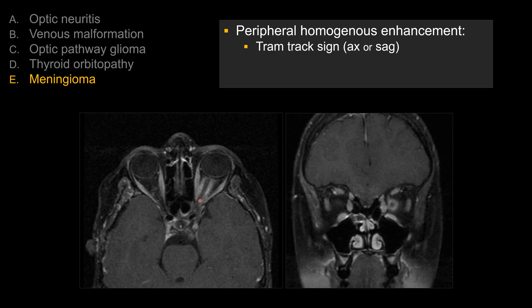Here you can clearly see a lesion that's outside of the optic nerve. On the axial view, the enhancement is parallel, like a track — the so-called tram track sign. On the coronal view, the enhancement is circumferentially surrounding the optic nerve. The non-enhancing central portion is the nerve itself, which looks like a donut — the donut sign.